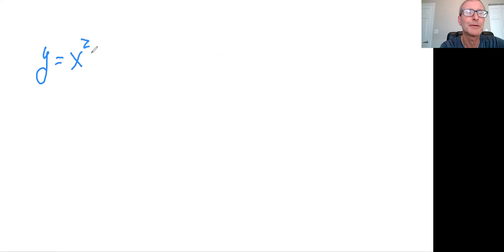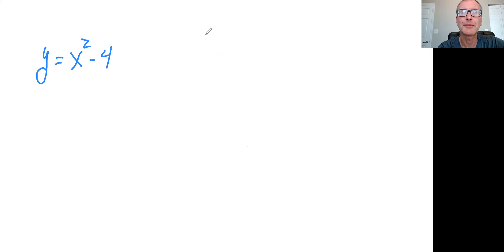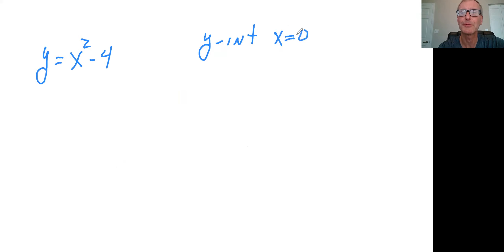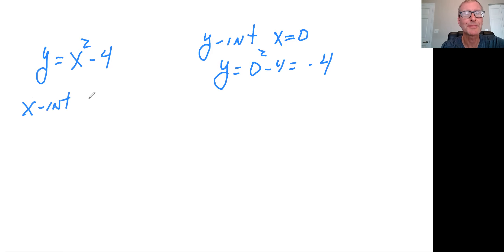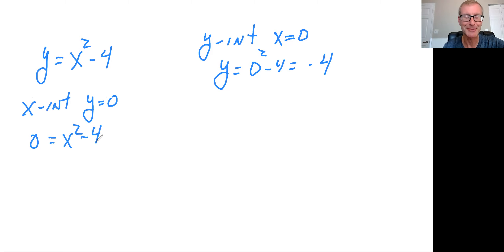Let's use a quadratic: say we have y equals x squared minus 4. First, calculate the y-intercept by setting x equal to zero and plugging into the equation. You get 0 squared minus 4, so the y-intercept is minus 4 — not bad. Now for the x-intercept, we set y equal to zero, giving us 0 equals x squared minus 4.